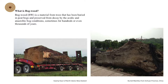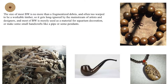But except for the minority of big logs, such as a swamp quarry from New Zealand and a kind of wood from Sichuan province of China, the size of most bogwood is no more than fragmentized debris and often too fragile to be workable as timber, so it gets long ignored by the mainstream of artists and designers. Most bogwood is merely used as a material for aquarium decoration or small handicrafts like a pipe or some ornaments.